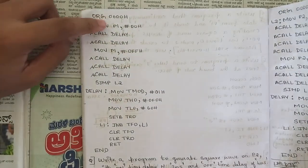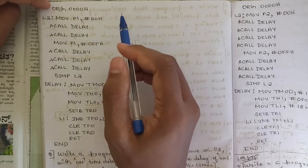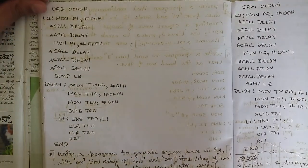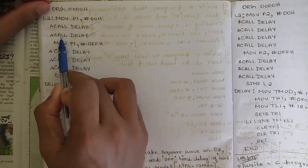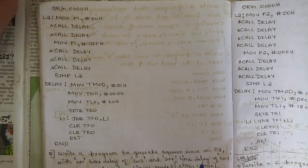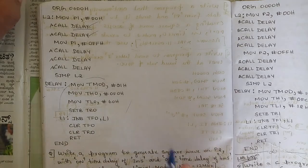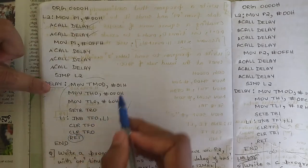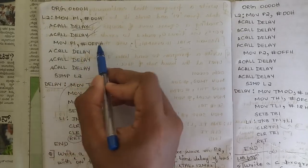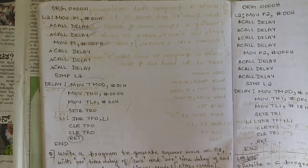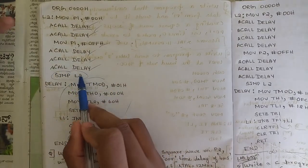The square wave code: ORG 00H, MOV P1, #00H for off time. Then ACALL DELAY twice for 4ms off time. For on time, MOV P1, #0FFH, then ACALL DELAY three times for 6ms. SJMP L2 to run continuously. The DELAY subroutine contains the timer code and RET instruction. This generates the required non-symmetric square wave.